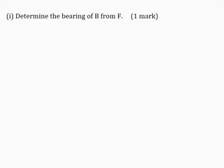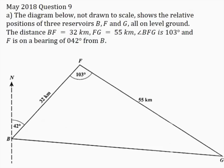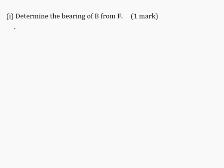Part 1: Determine the bearing of B from F for one mark. The first thing I will do here is to draw a north line at the vertex F. Now the north lines NB and NF are parallel lines, and BF is a transversal, and the interior angles on the same side of the transversal are supplementary. So I can write here that angle NFB is equal to 180 degrees minus angle NBF.